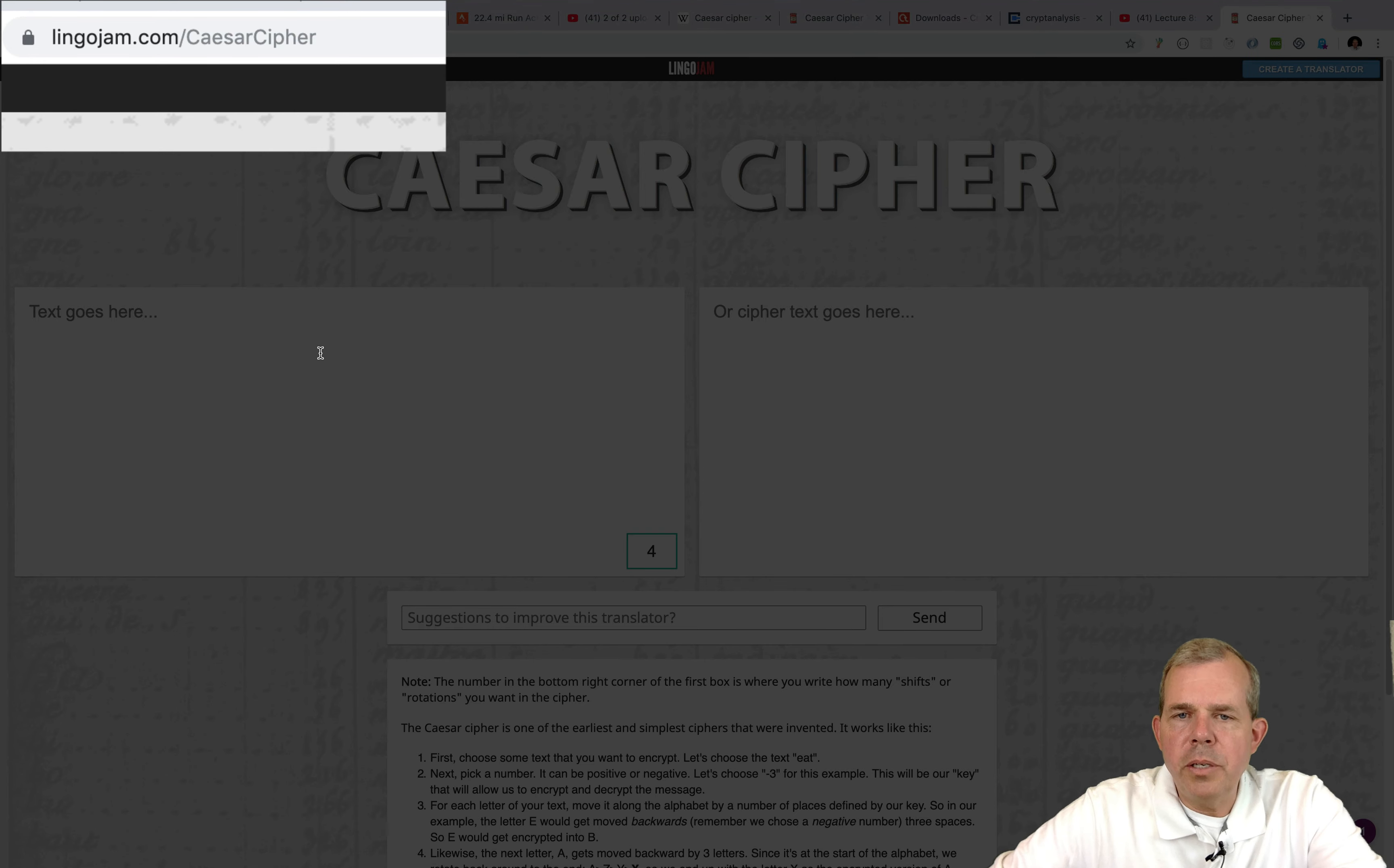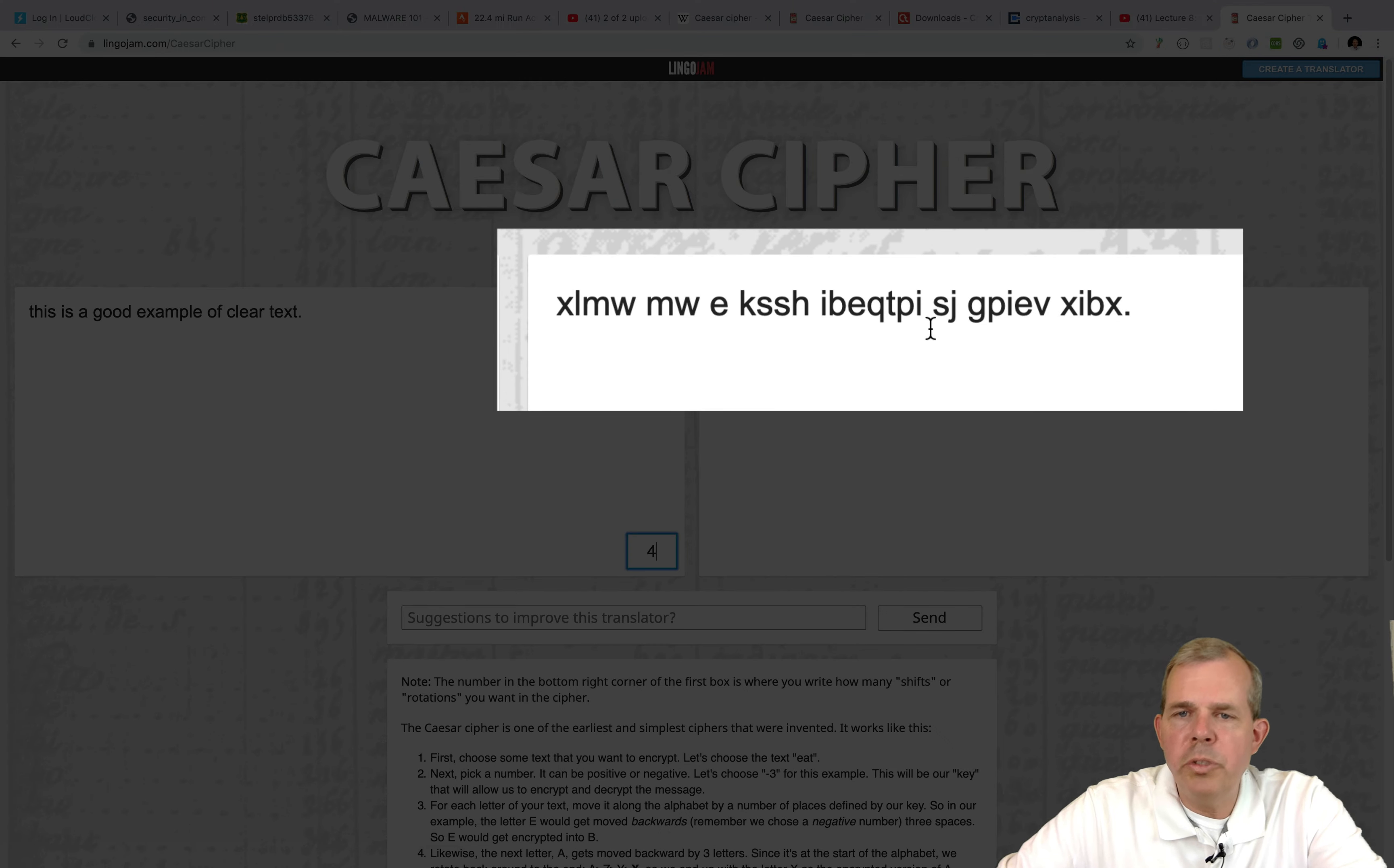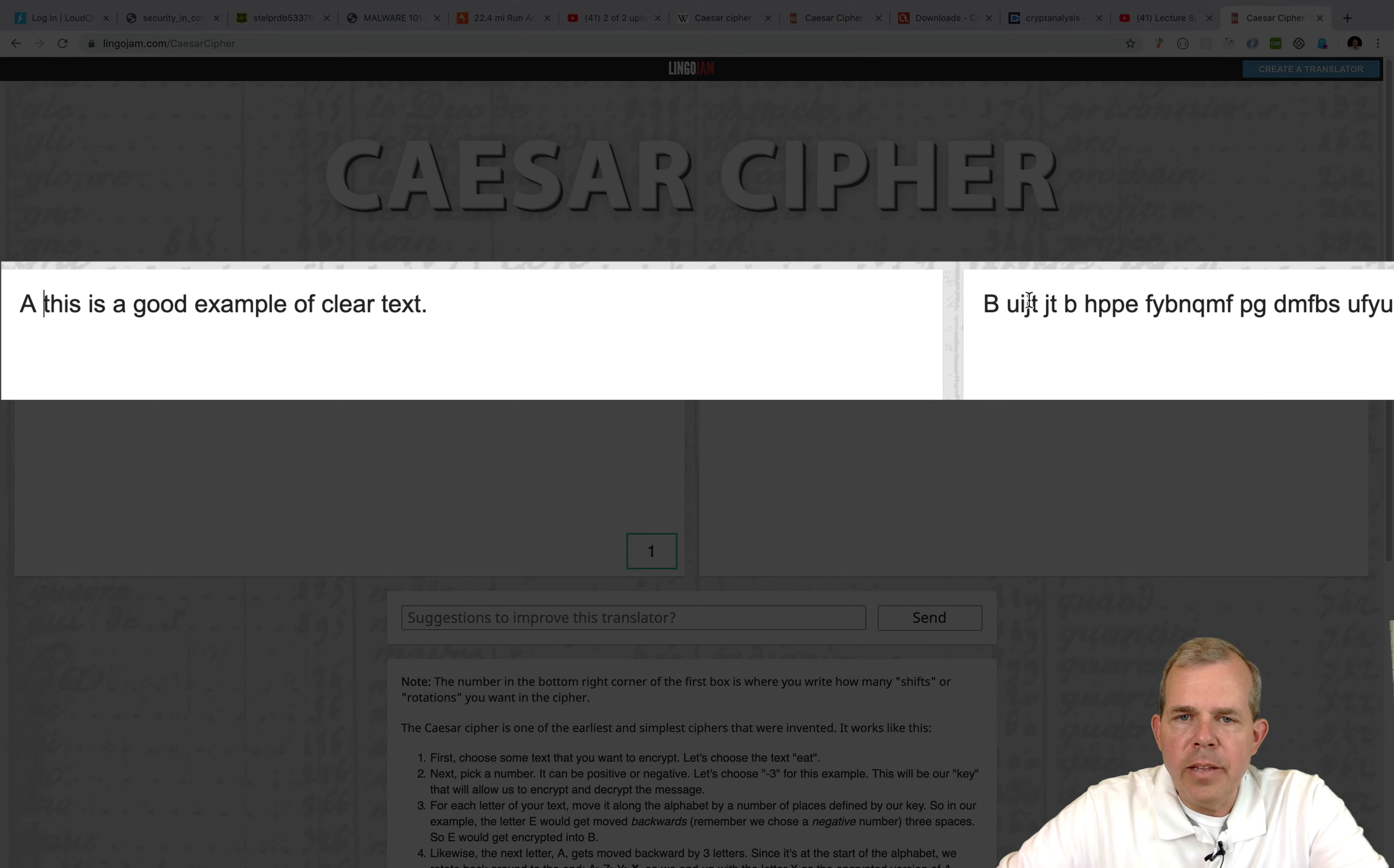So here's a web page that will do the work for you. I'm going to type here just some sentence. This is a good example of clear text. After typing the text, you can see that I have an encrypted message on the right side. We can control how it's encrypted with this number down here. So if I put in a 1, you can see that these are shifted one place to the right. If I put in the letter A, for example, I get a letter B over here.